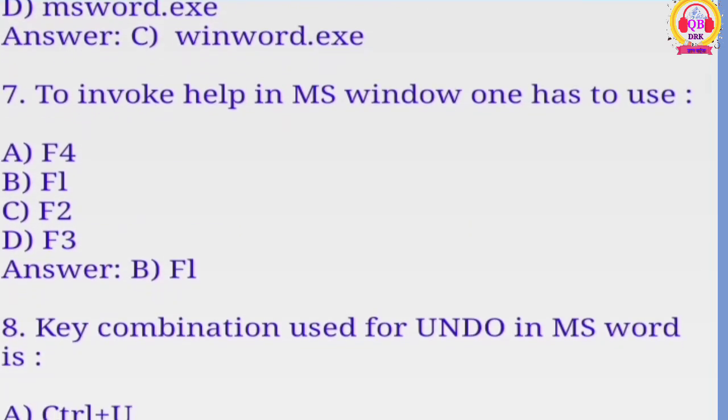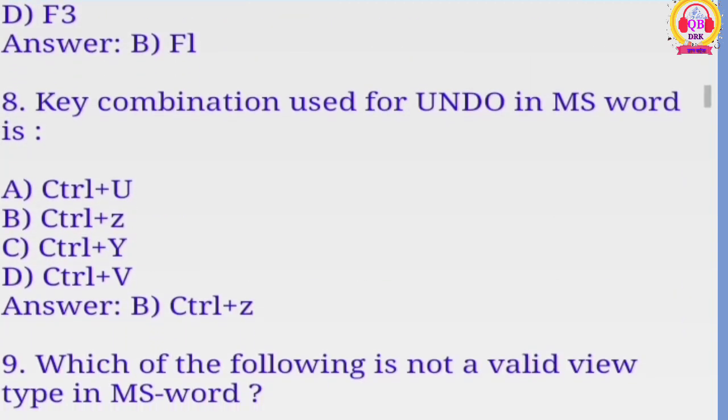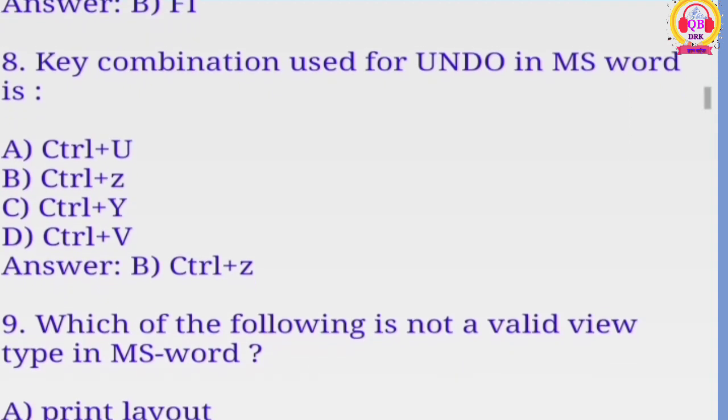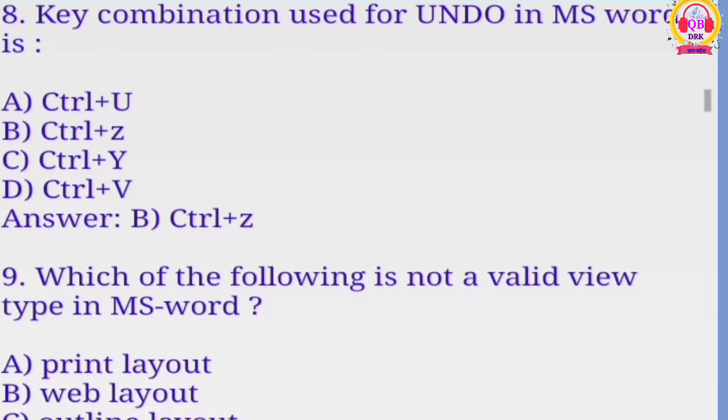To invoke help in MS Windows one has to use F1, F2, F3. B is the correct option, F1. What combination used for in MS Word? Option B is the correct option.